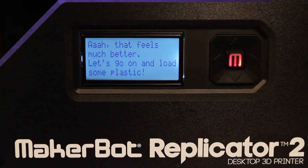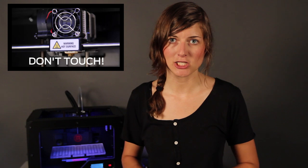After you've leveled the build platform, your MakerBot Replicator 2 desktop 3D printer will prompt you to begin loading your MakerBot PLA filament. The extruder on your MakerBot Replicator 2 will be heating during this process, so be careful not to touch it.